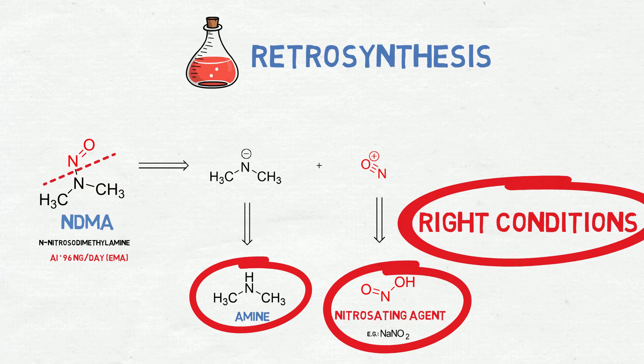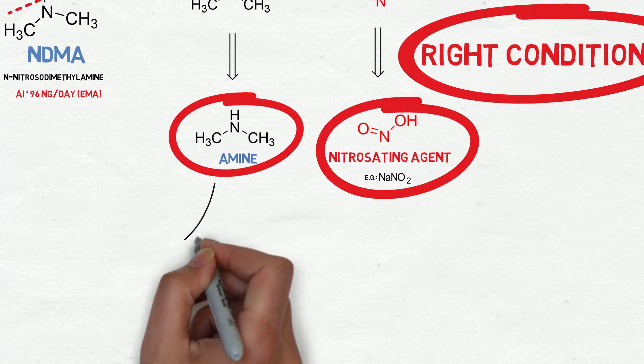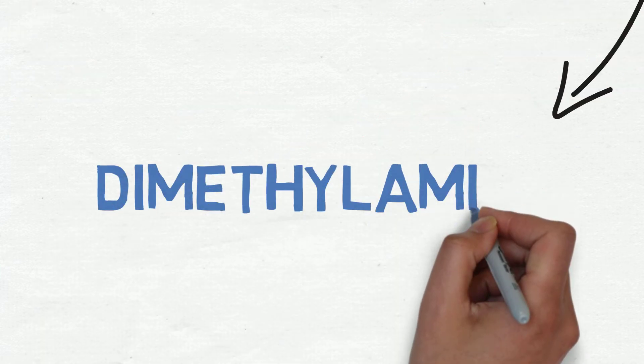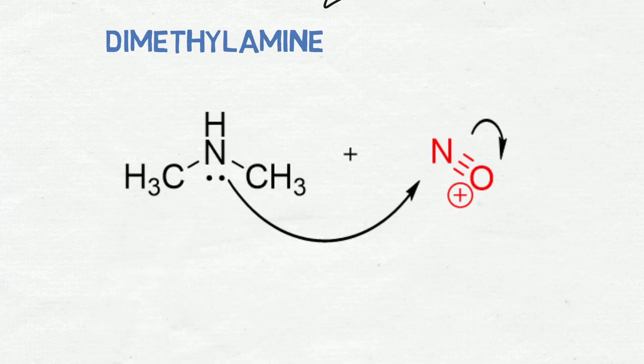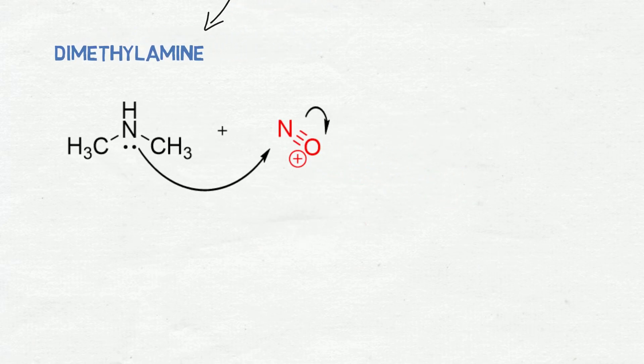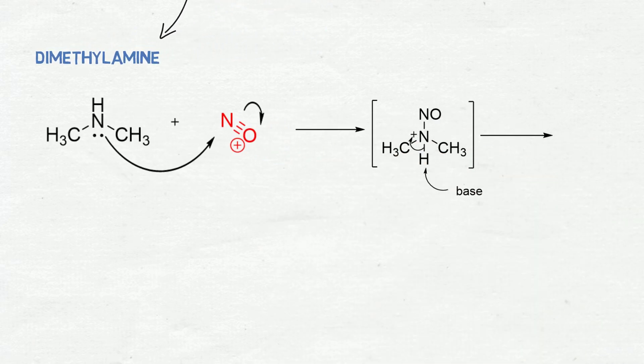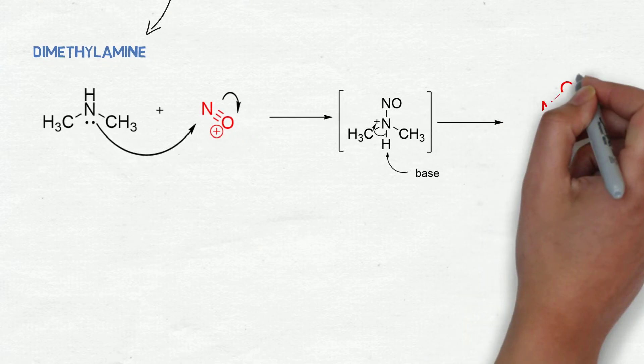We are keeping using NDMA as an example. For that, we are going to select dimethylamine. If dimethylamine is present with a nitrosonium, there is an attack of the pair of electrons from the nitrogen of the dimethylamine to the nitrosonium, resulting in an intermediate that after abstraction of a proton generates NDMA.